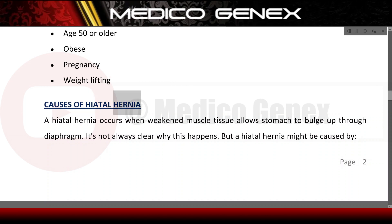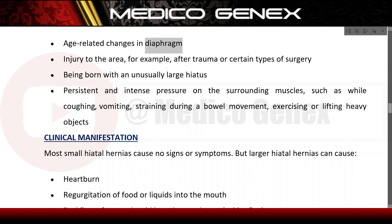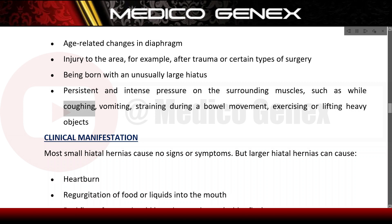Causes of hiatal hernia. A hiatal hernia occurs when weakened muscle tissue allows the stomach to bulge up through the diaphragm. It is not always clear why this happens, but causes may include age-related changes in the diaphragm, injury to the area after trauma or certain types of surgery, being born with an unusually large hiatus, and persistent intense pressure on surrounding muscles such as while coughing, vomiting, straining during a bowel movement, or exercising and lifting heavy objects.